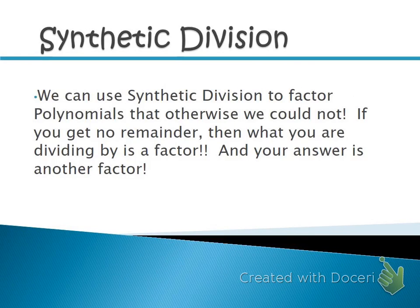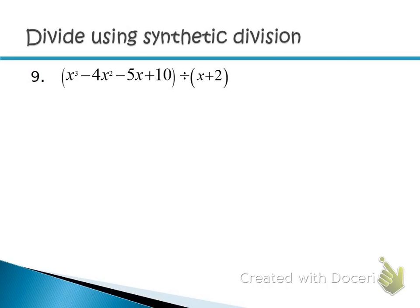Here's how synthetic division works. We're dividing by x + 2. Take the opposite of the constant — instead of positive 2, use negative 2 — and put it in a tiny box on the left. To the right of that box, write down just the coefficients from the original polynomial. The polynomial has to be in descending order and all terms must be included. Write down the coefficient of x³, then x², then x, then the constant.